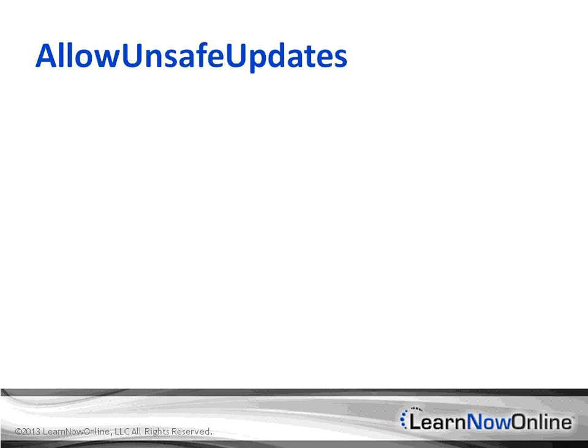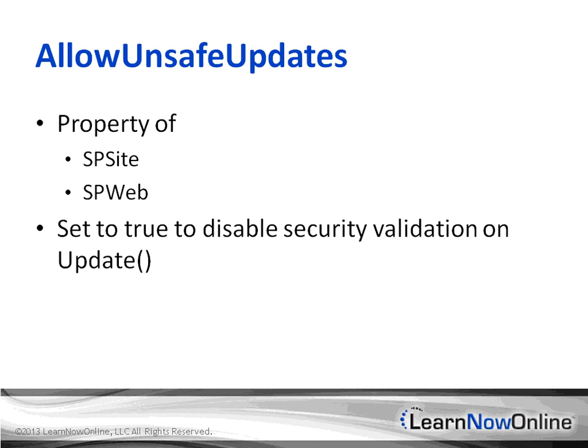Sometimes you may be doing an update while in an elevated privileges state. Especially on an HTTP GET request, SharePoint considers that an unsafe update — it doesn't consider it safe to update an item in a list during an HTTP GET. There is a way around that: on either the web or the list, whatever you're trying to update, there's a property called AllowUnsafeUpdates. You would set AllowUnsafeUpdates to true for the web, and then once done, call Update.